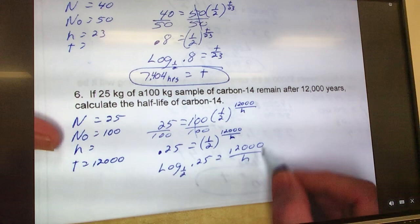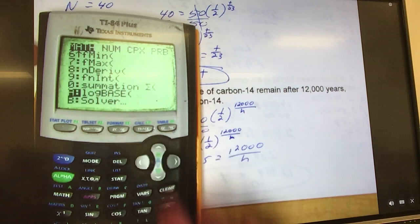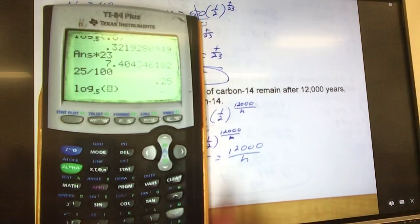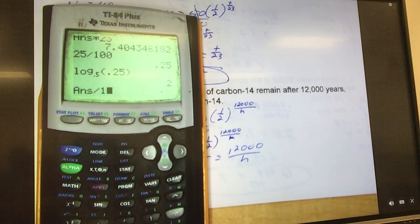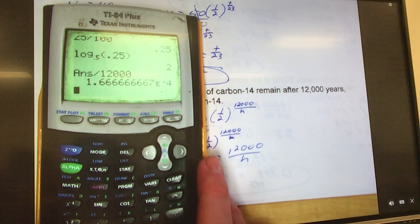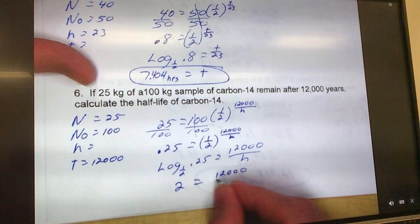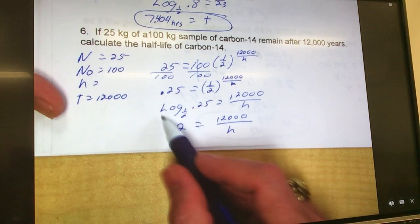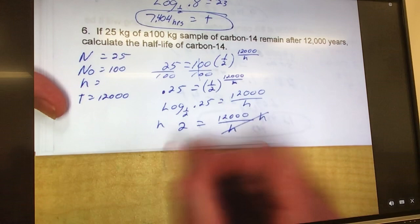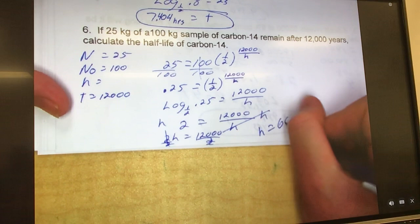So we have log one-half, and then we add 0.25, hit enter, and we're going to divide that by 12,000. Let me back up, so this was 2 equals 12,000. I'm sorry, you got to divide 12,000 by it, my fault. So this equals 2. So get rid of my H, multiply, so that's 2H equals 12,000. Now divide by 2. 12,000 divided by 2 is 6,000. There we go, 6,000 years.